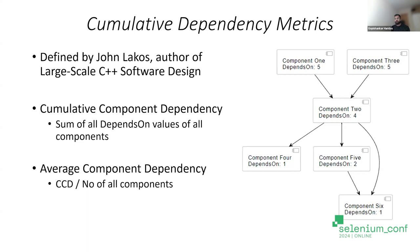How does this help us? We can understand how many dependencies we have across components and use these values to understand how our code is structured — and potentially reduce dependencies further or make the code more reusable and more modular. That is how we can use cumulative dependency metrics.